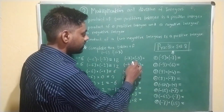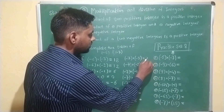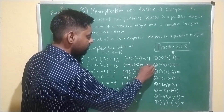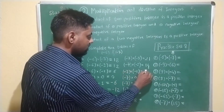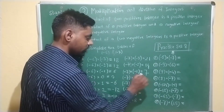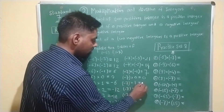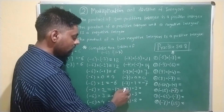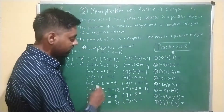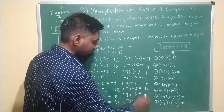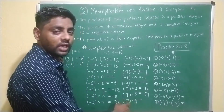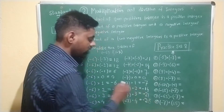Next, minus 7 multiplied by minus 3: the answer is plus 21, by rule 3. Minus 7 multiplied by minus 2: the answer is plus 14. Minus 7 multiplied by minus 1: the answer is plus 7. Minus 7 multiplied by 0: answer is 0. Minus 7 multiplied by 1: answer is minus 7. Minus 7 multiplied by 2: answer is minus 14. Minus 7 multiplied by 3: answer is minus 21. Minus 7 multiplied by 4: answer is minus 28.